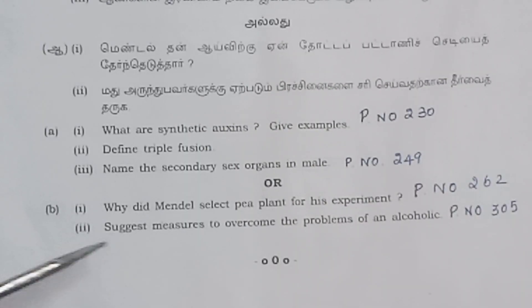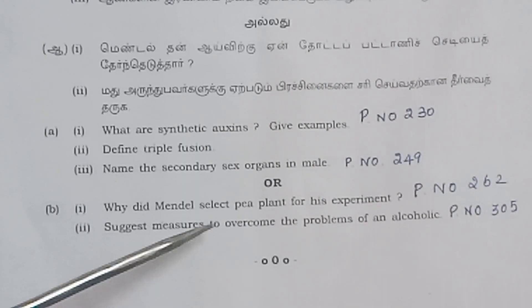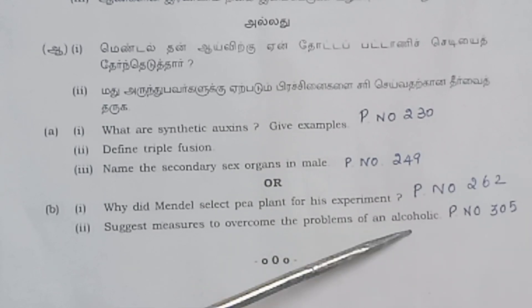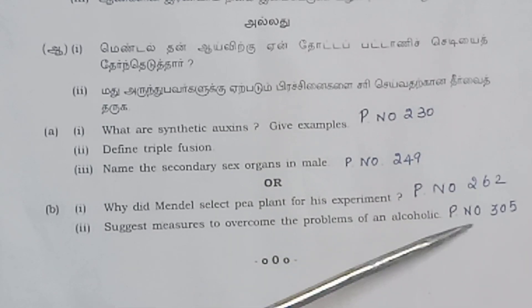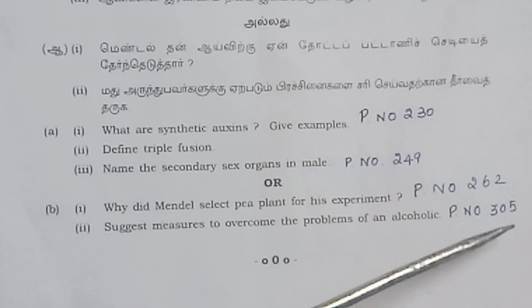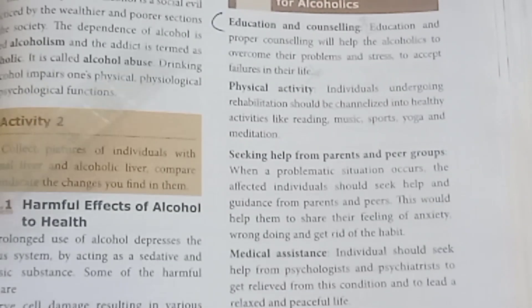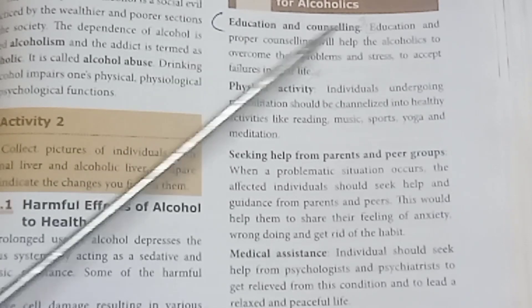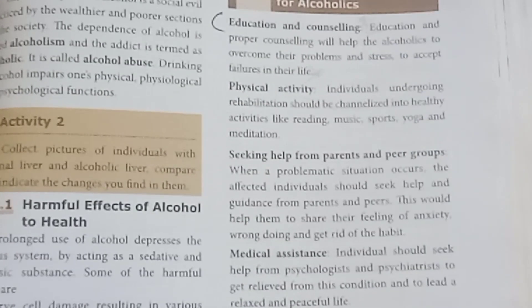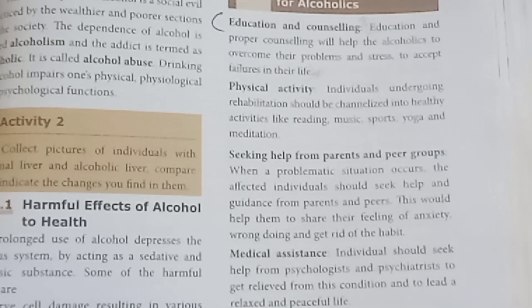Question 35B second part: Suggest measures to overcome the problems of an alcoholic. Refer to page number 305. Measures include education and counselling to help the person lead a normal and healthy life. This question carries 4 marks.